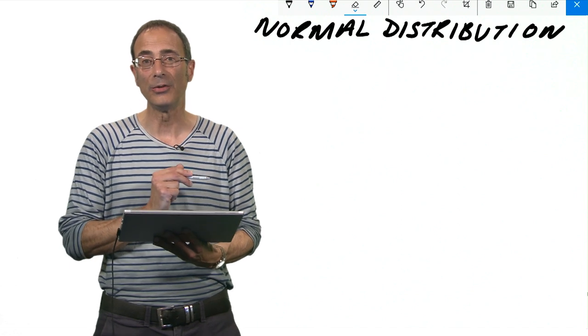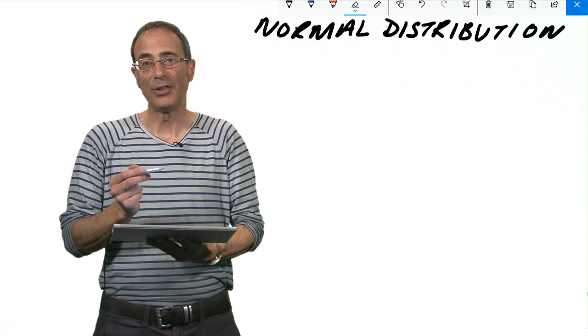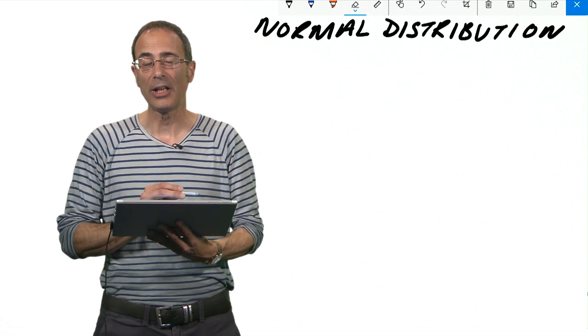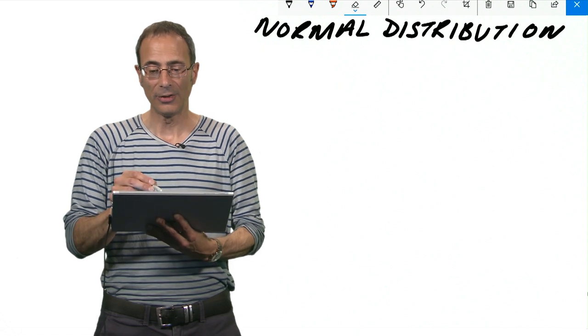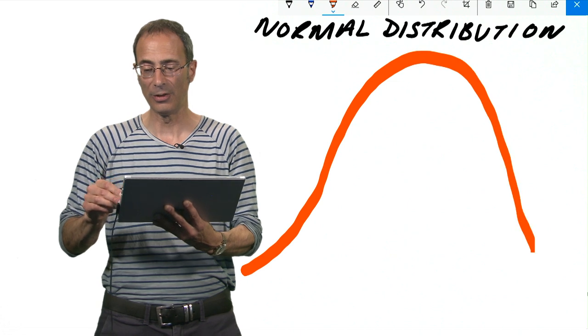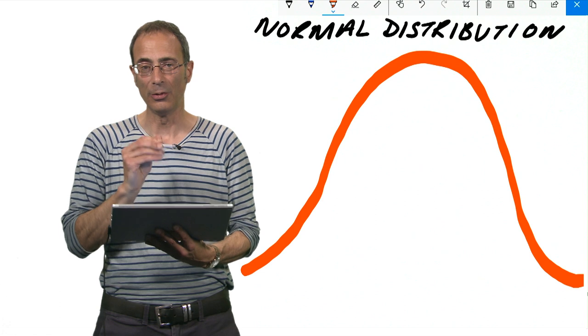It doesn't matter what kind of variables you have, could be people's height, could be the average temperature of a day of the year. If it makes the normal distribution shape when you plot your data, which is the classic symmetrical bell-shaped curve which I'm attempting to draw here, then certain things are automatically true about it.